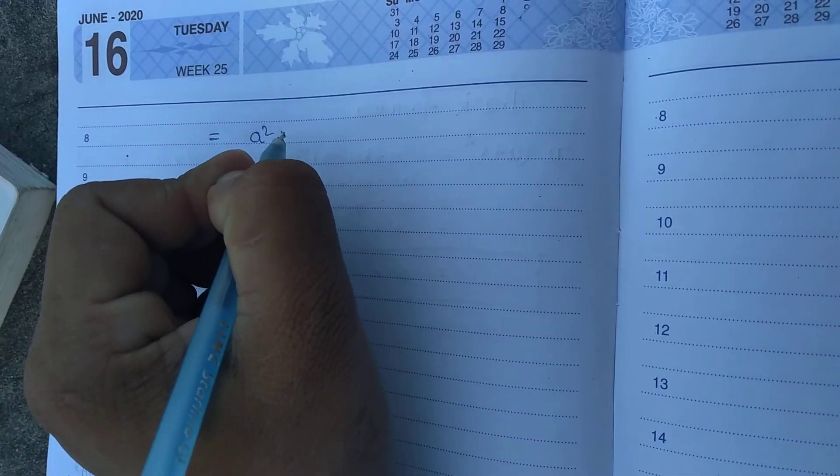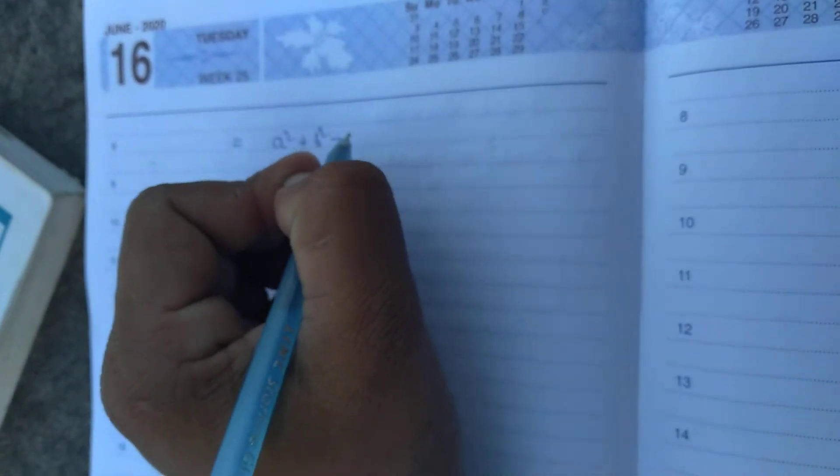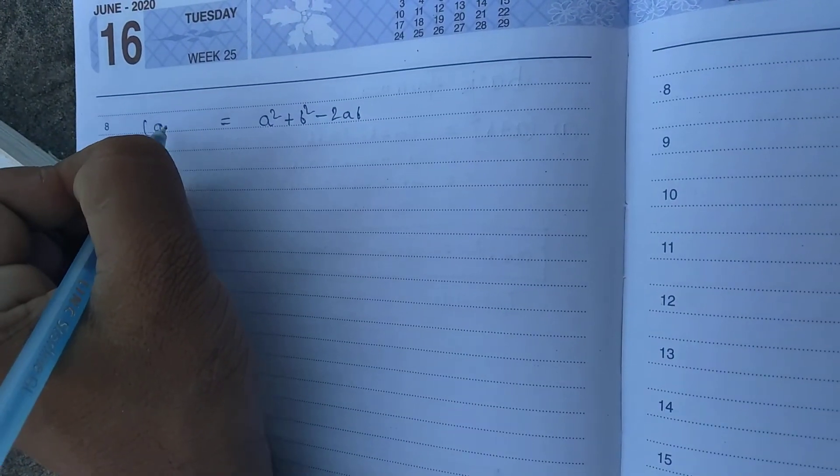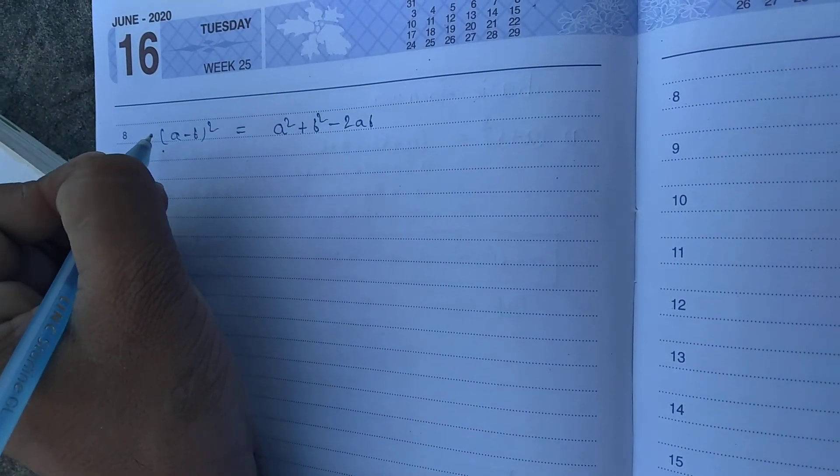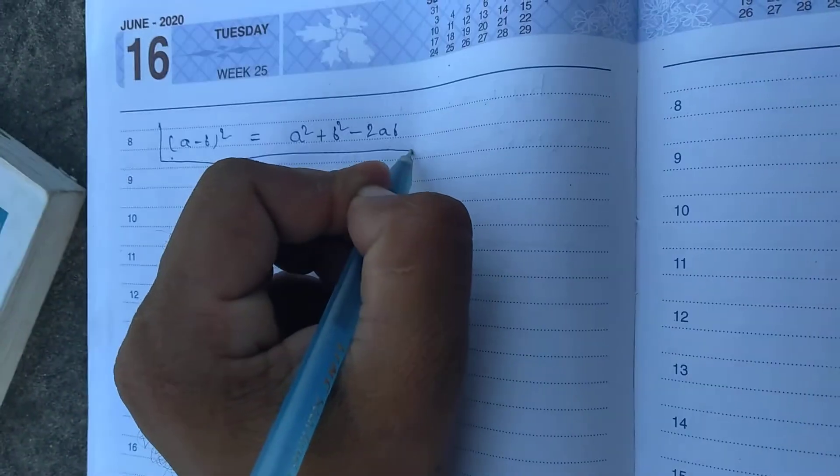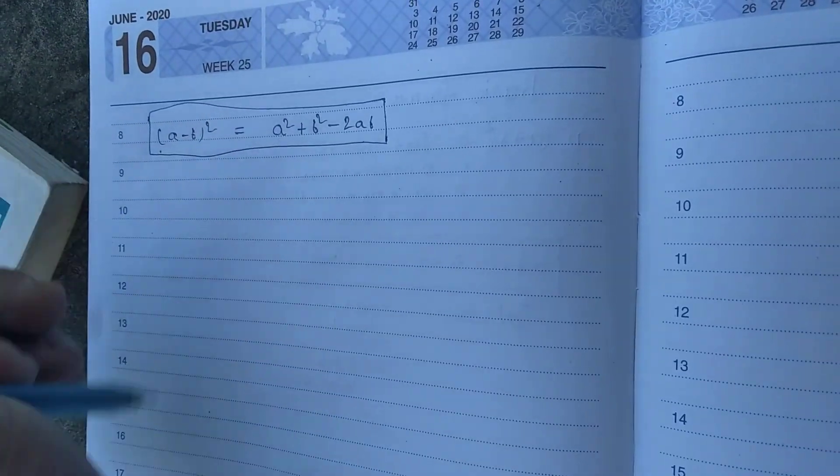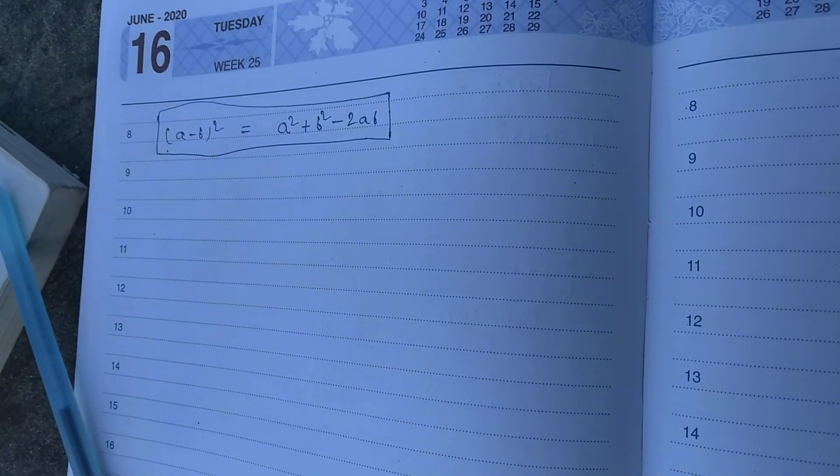A square plus B square minus 2 A B. A minus B, A minus B all square. Okay, we can write it.